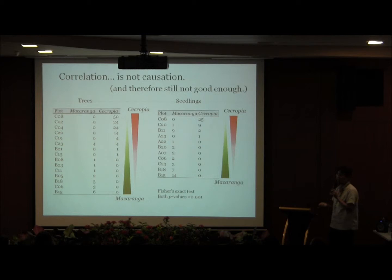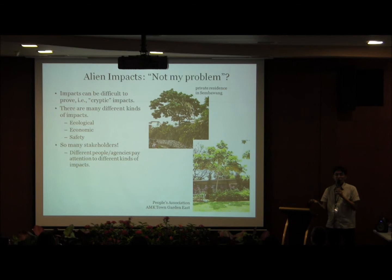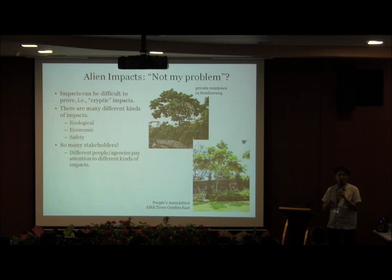Because Cecropia is a tree, it disperses and establishes on all kinds of land belonging to different stakeholders. If you go to someone and say this is affecting Macaranga — a nice native tree in nature reserves — they might look at you blankly. They might not be concerned about what you're concerned about. Even within the biodiversity community, some people might feel Macaranga is a redundant species. There are so many different kinds of impacts you can try to prove, and each stakeholder who owns the land will have a different impact that is close to their heart.